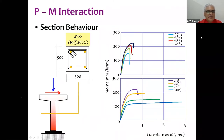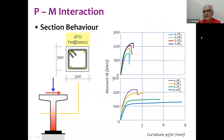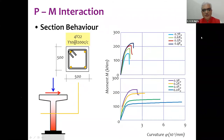For a typical cross section, we can draw the moment-curvature relationship for different levels of axial load — from zero axial load to 0.7 P_ultimate. We clearly notice that as axial load increases, ductility reduces, meaning that if you want ductile structures you need stocky columns rather than slender ones.